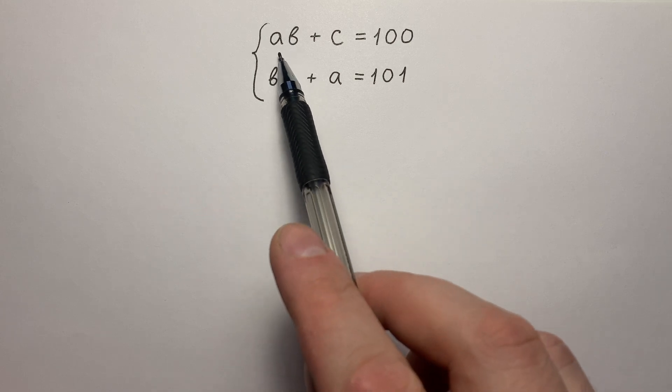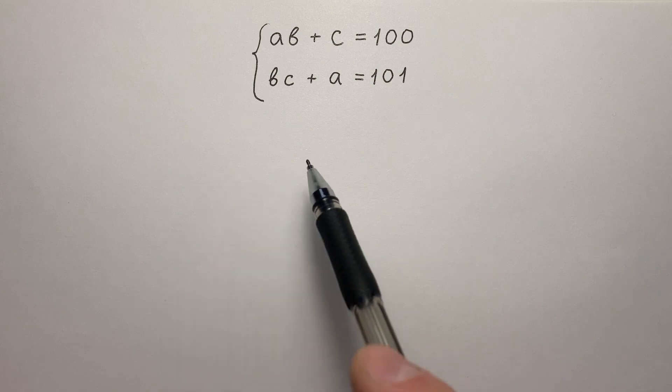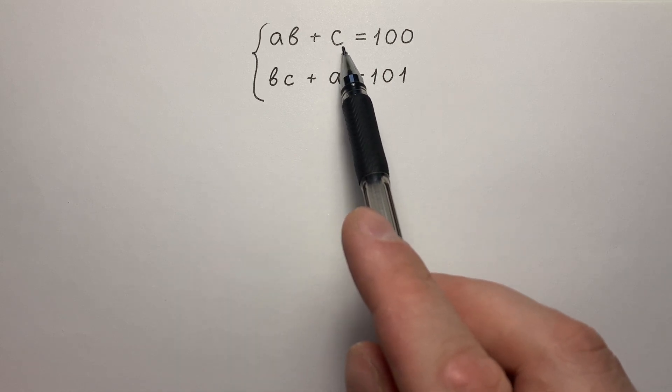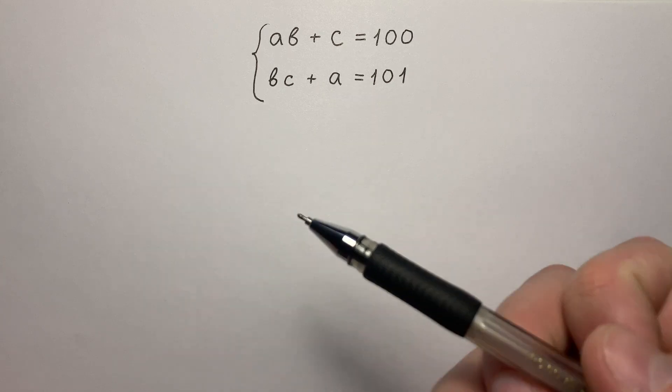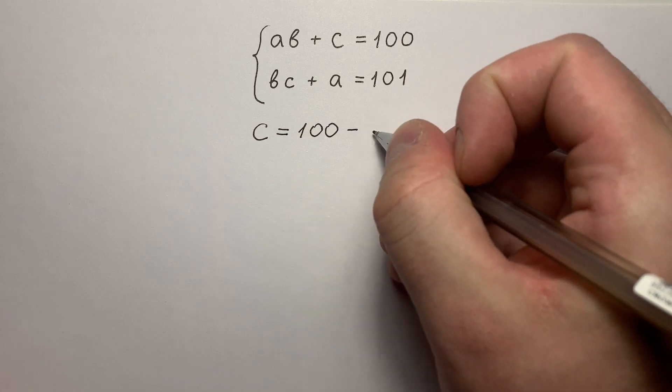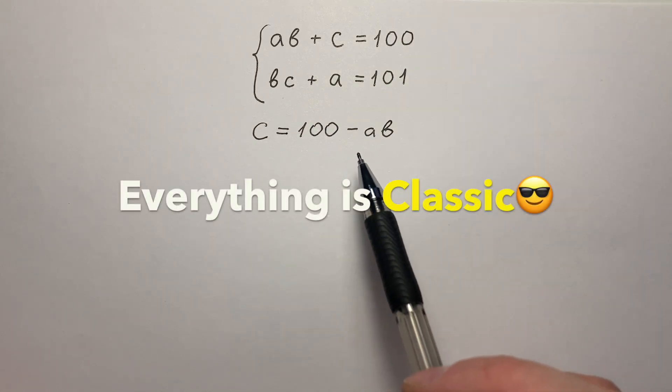Look closely to the first equation. What's wrong with it? In my opinion, variable C is begging us to express it. So let's try. C equals 100 minus A times B, of course. And then everything is classic.